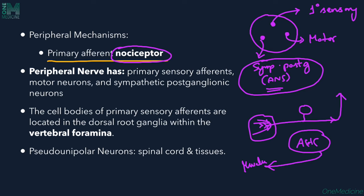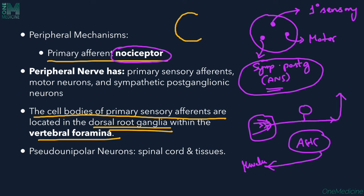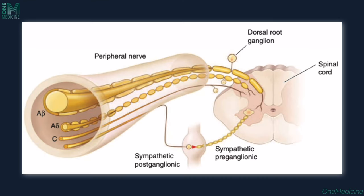The cell bodies of primary sensory afferents are located within the dorsal root ganglion within the vertebral foramina — not exactly within the spinal cord itself. If we look at a cross-section with anterior and posterior orientation, the dorsal root ganglion is located here, and this is where the actual cell body of the sensory fibers is present.